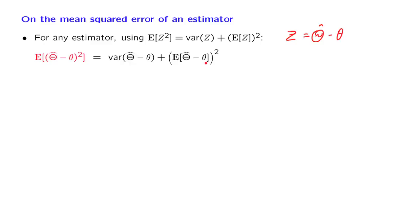Let us now rewrite these two terms in a more suggestive way. We first notice that theta is a constant. When you add or subtract a constant from a random variable, the variance does not change. So this term is the same as the variance of theta hat.